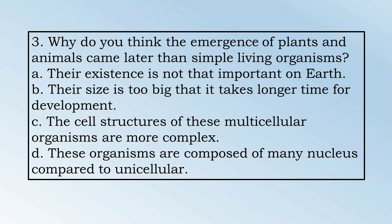Number 3. Why do you think the emergence of plants and animals came later than simple living organisms? A. Their existence is not that important on Earth. B. Their size is too big that it takes longer time for development. C. The cell structures of these multicellular organisms are more complex. Or D. These organisms are composed of many nucleus compared to unicellular.